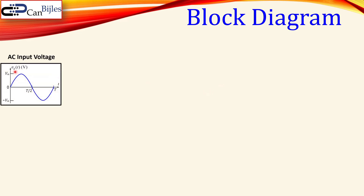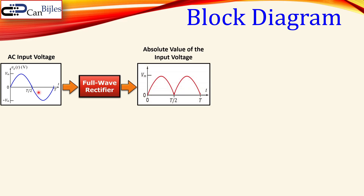We have a specific input voltage which is our AC input, having some specific frequency and some amplitude, and this will then be fed to a full-wave rectifier. It will produce the absolute value of this signal — the blue line becomes the red line — and the frequency here is doubled when you go from this AC input signal to this absolute value of your input signal.